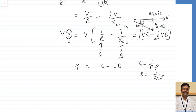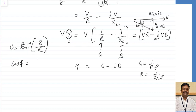The angle phi equals tan inverse of B by R — more precisely, tan inverse of the imaginary component B over the real component. The power factor cos phi equals G divided by Y. This gives the power factor for the parallel RL case.